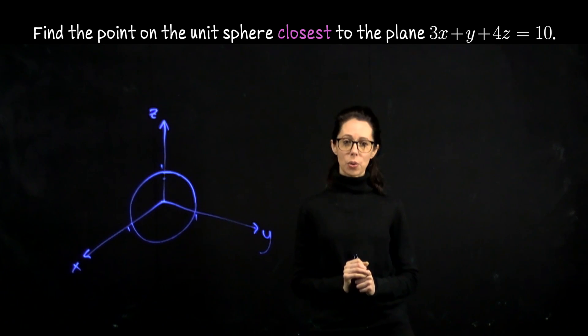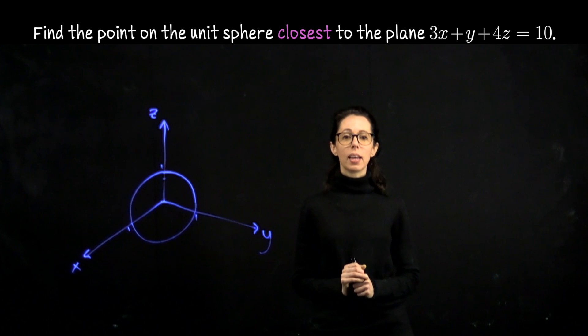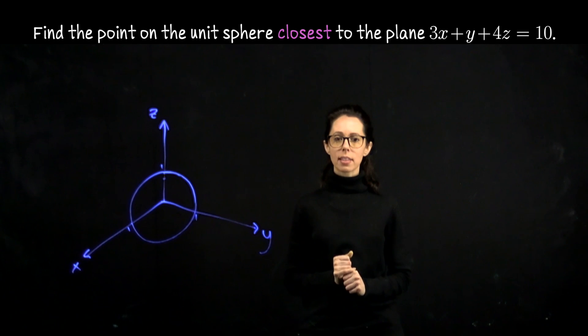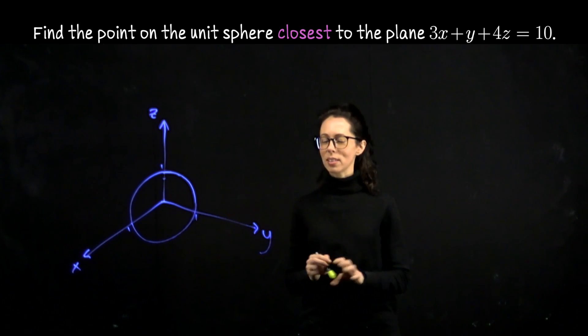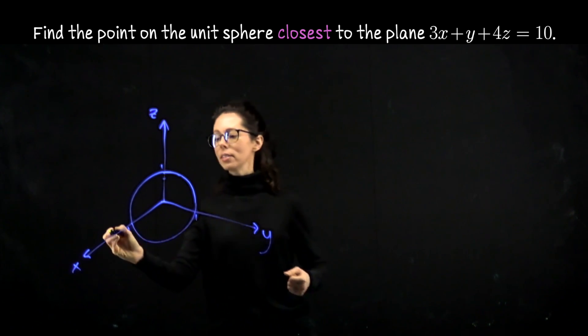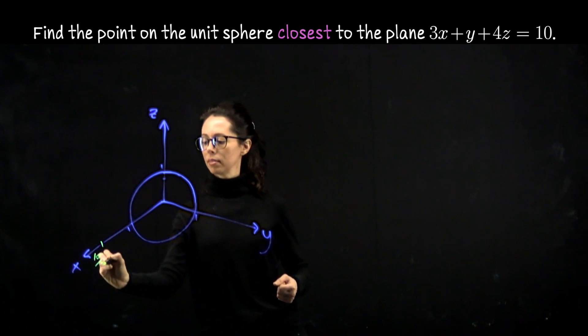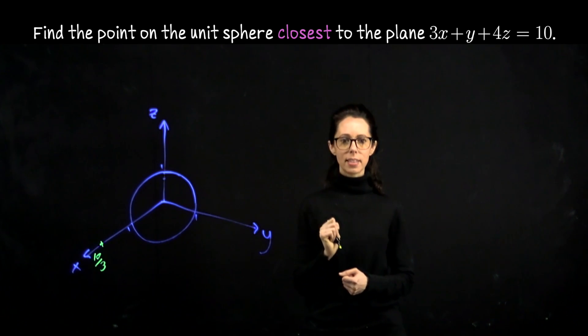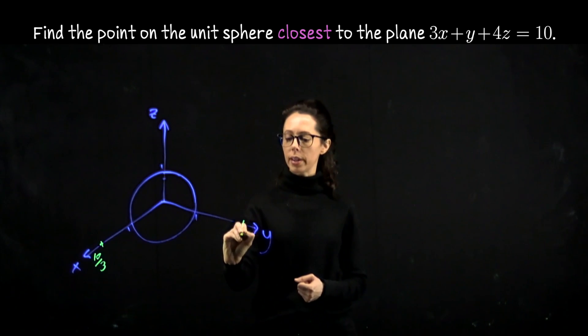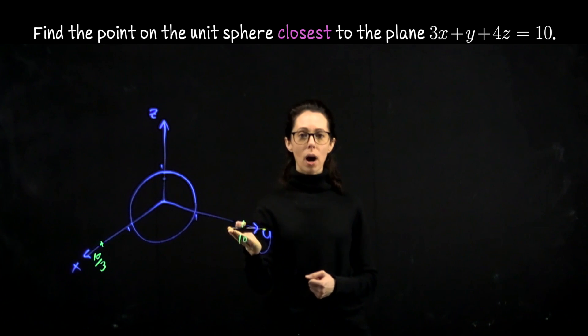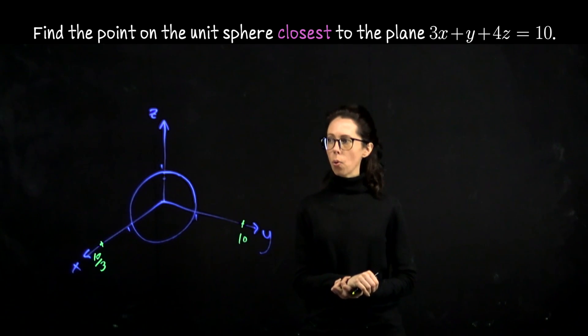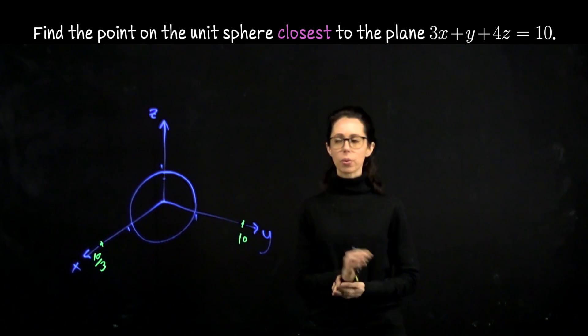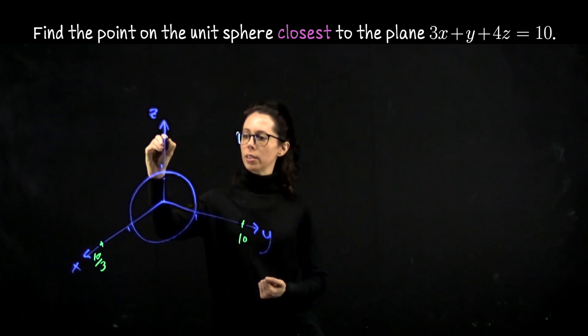For the plane, what you can do is say, where does this plane intersect the x axis? That means zero out the y and z coordinates and we're looking at 3x equals 10. So that's like a little bit beyond 3. It's not going to be to scale, but let's say this is 10 thirds. Here's the x-intercept. For y, when x and z are 0, y is 10. It's way over here. Here's the y-intercept. And then 4z equals 10 when x and y are both 0 tells us 5 halves, so a little bit beyond 2 or between 2 and 3. So let's say that's about here.